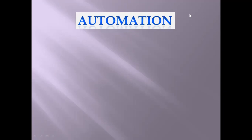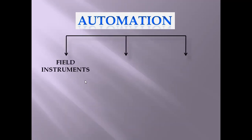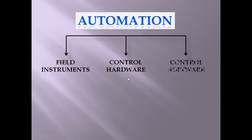When we come to automation, there are three main components. The first is field instruments — different types of sensors and measuring instruments, like push buttons, toggle switches, and proximity sensors. These are connected to the control hardware, which is your PLC. And from the PLC, you connect to the control software, which is your SCADA or HMI.